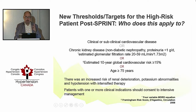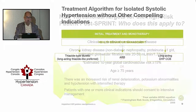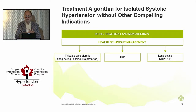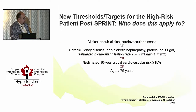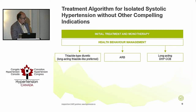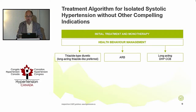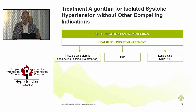It turns out there is a little bit of an anomaly for patients with systolic hypertension. The current Hypertension Canada guidelines would suggest only three choices: an ARB (not an ACE inhibitor), a long-acting dihydropyridine calcium channel blocker, or a thiazide-type diuretic. There is currently a little discrepancy in the Hypertension Canada guidelines, which I'm sure will get fixed.